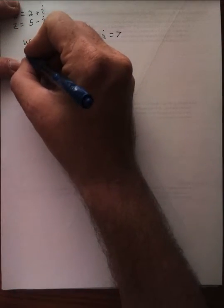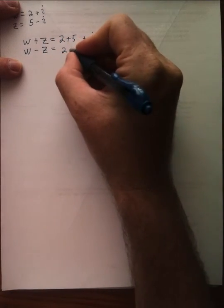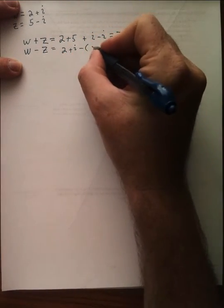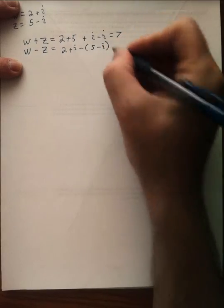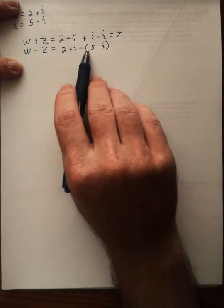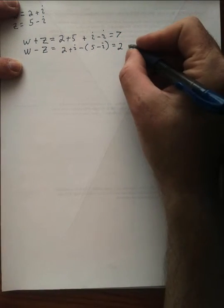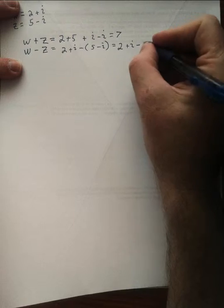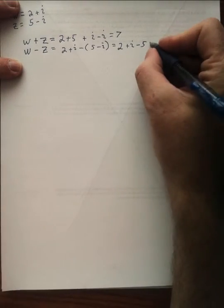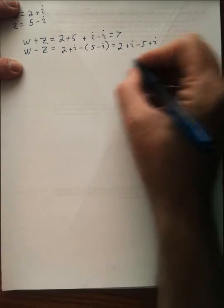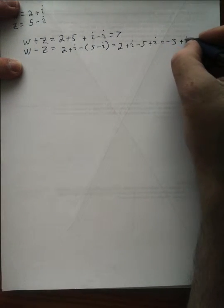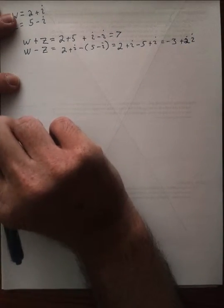Likewise, if we wanted to subtract, that's going to look like this: 2 plus i minus 5 minus i. Don't forget to distribute the minus sign. This is plus negative 1 times this. So this becomes 2 plus i minus 5 plus i. 2 minus 5 is negative 3. i plus i is 2i. So adding and subtracting, fairly straightforward.